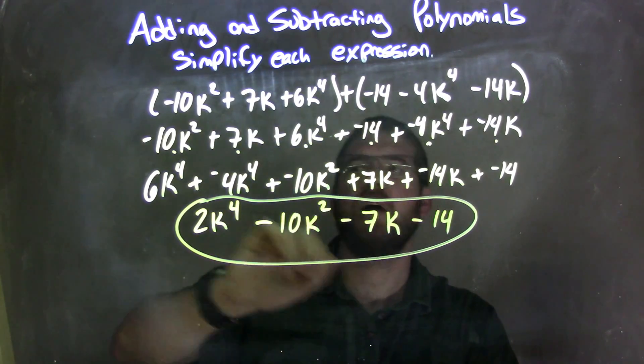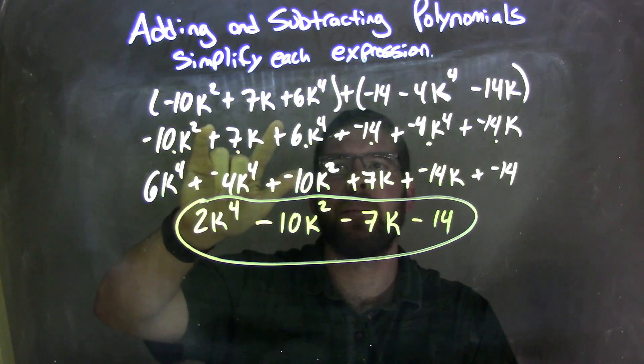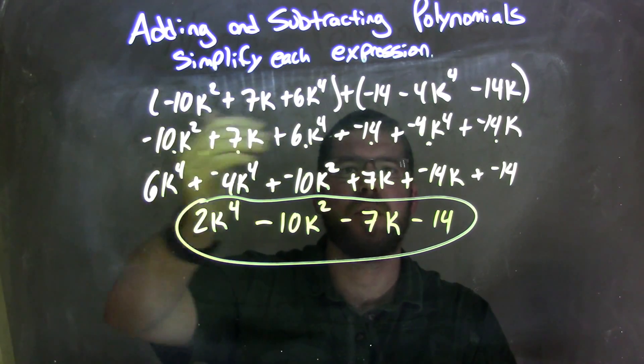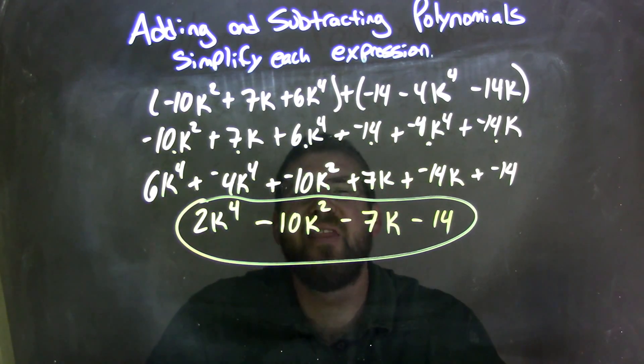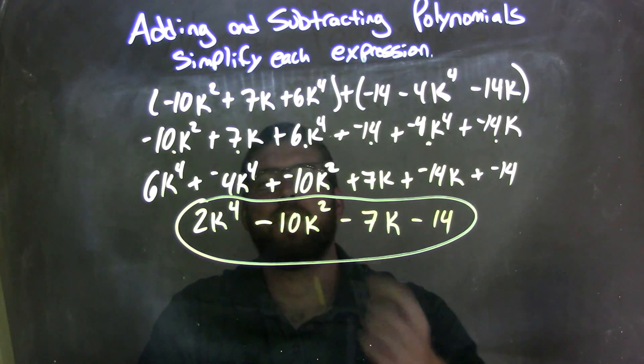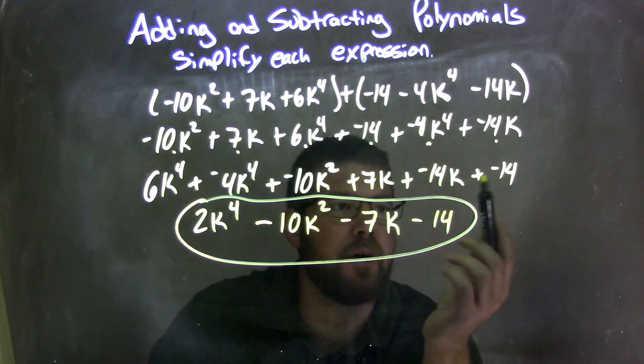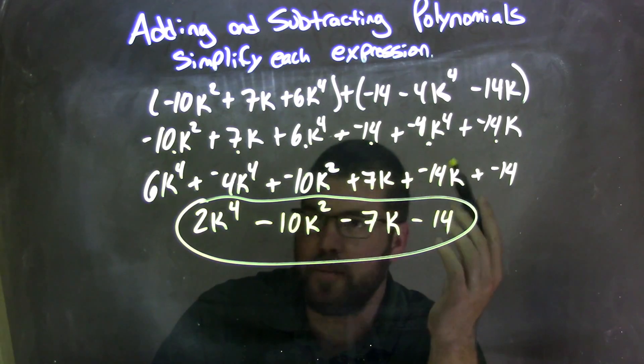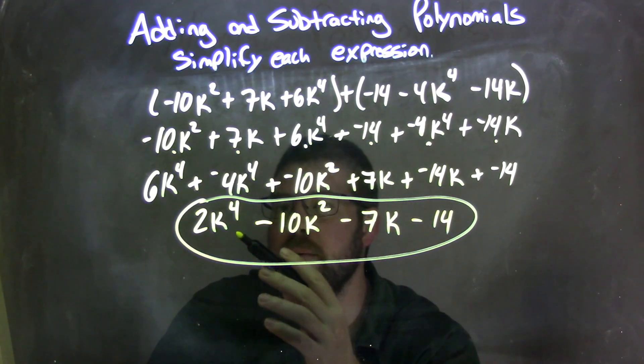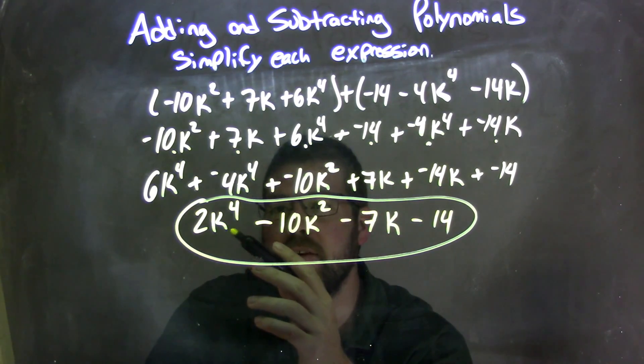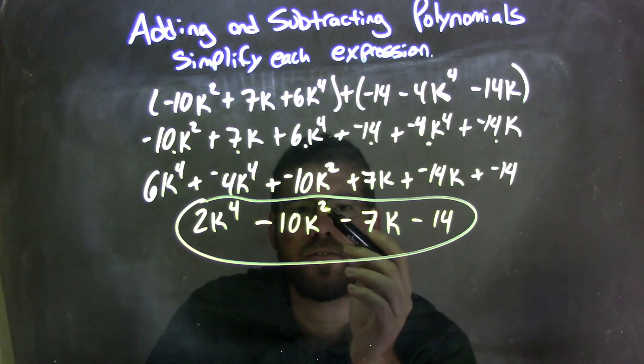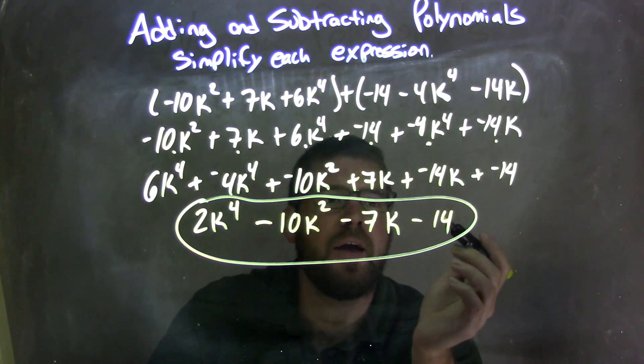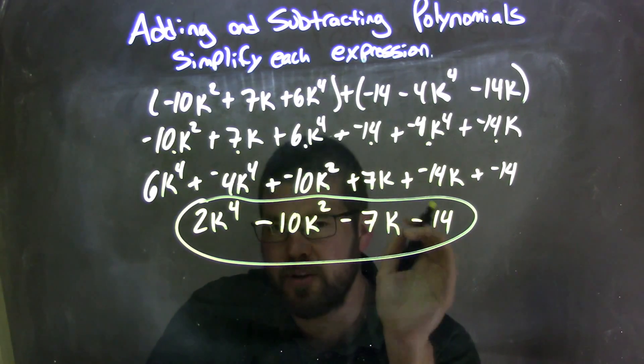So let's recap. We're getting our two parentheses. I took everything here and made them into adding a negative, really on the right-hand side. Then I combined my like terms with my highest degree first. The fourth power is first, then the second power, then the first powers, then the constants. Then I combined my like terms. Or I also double checked that I brought everything down. Then I combined my like terms, got me 2k to the fourth minus 10k squared minus 7k minus 14, and that is our final answer.